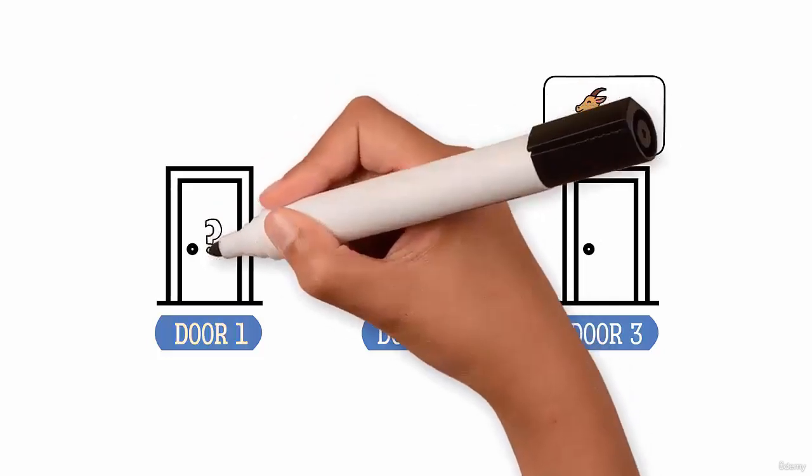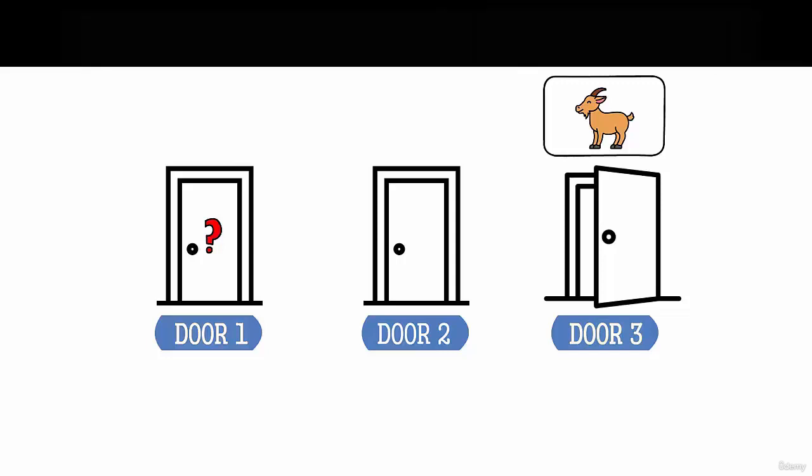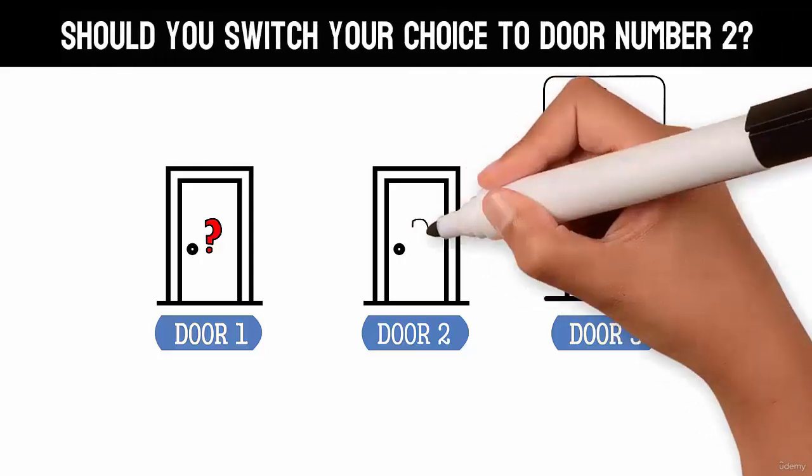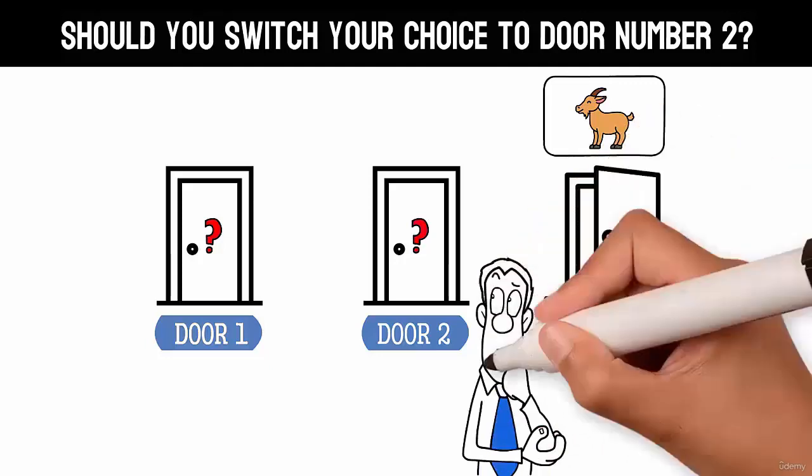And the host who knows what's behind the doors will open door number three, which will have a goat. He then asks you, do you want to switch your option to door number two? Should you do it? Is it to your advantage to switch your choice?